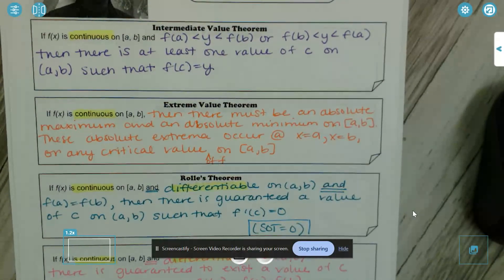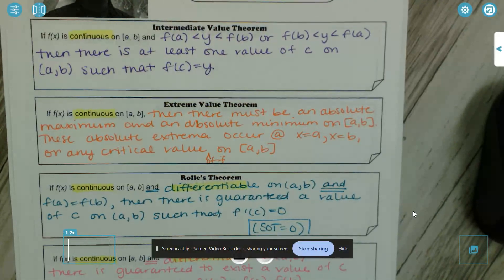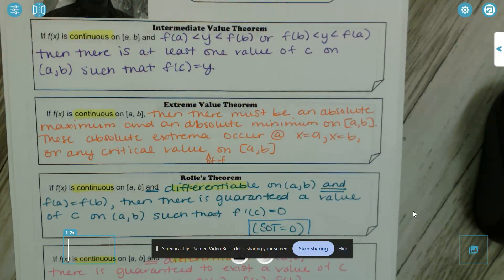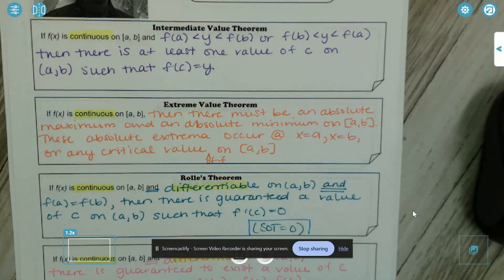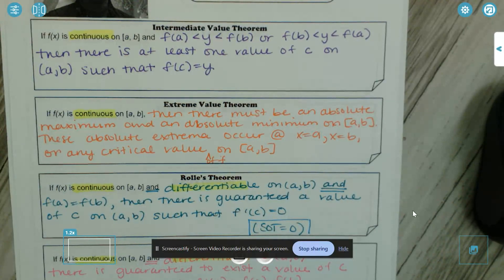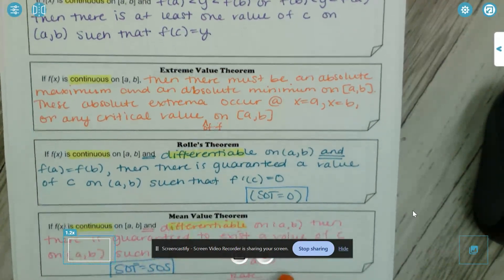Intermediate Value Theorem: if f of x is continuous on the closed interval [a, b], and f(a) < y < f(b) or f(b) < y < f(a), then there is at least one value of c on (a, b) such that f(c) = y. So that y is going to be between f(a) and f(b).